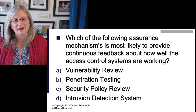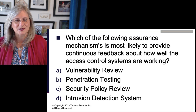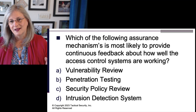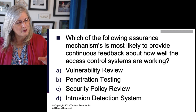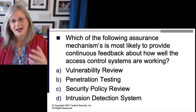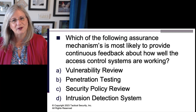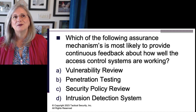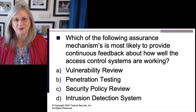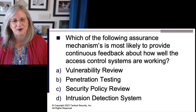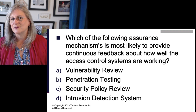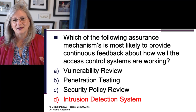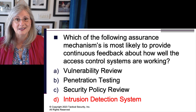We need continuous feedback. We have three answers that are humans — people. One of my test-taking tips is to look for people, then process, then technology, but it has to answer the question. Here we're looking for continuous feedback and people are actually out. So A, B, and C are out. The best answer is D — intrusion detection systems — because we need it to continuously work.